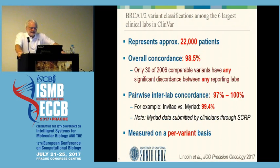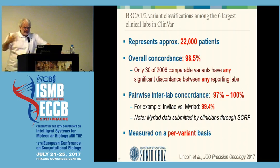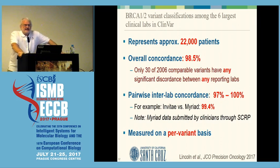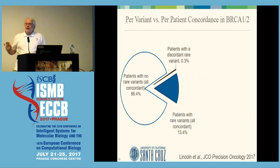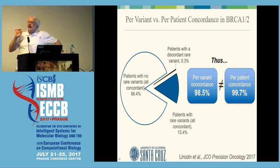In this even larger study that we just recently published with the University of California Santa Cruz group, looking at what amounts to 22,000 patients worth of data, we find concordance between laboratories is, in fact, quite high. This is high counting variants. There's an important point: if you count patients, it's even higher, because the only variants we tend to have significantly different classifications of are the very, very rare ones that you actually don't see in many patients.